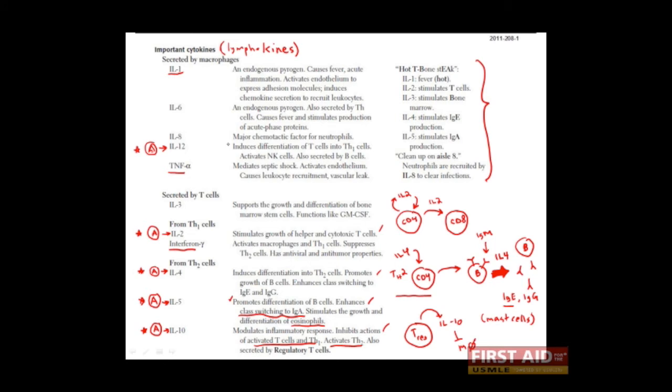IL-10 also seems to inhibit the function of macrophages. Finally, interleukin-12 is involved in the differentiation of T cells into a Th1 subtype. It also activates NK, or natural killer, cells. Okay, so now that we've talked about the cytokines which have their most predominant role on cells of the adaptive immune system, let's talk about the remaining ones.